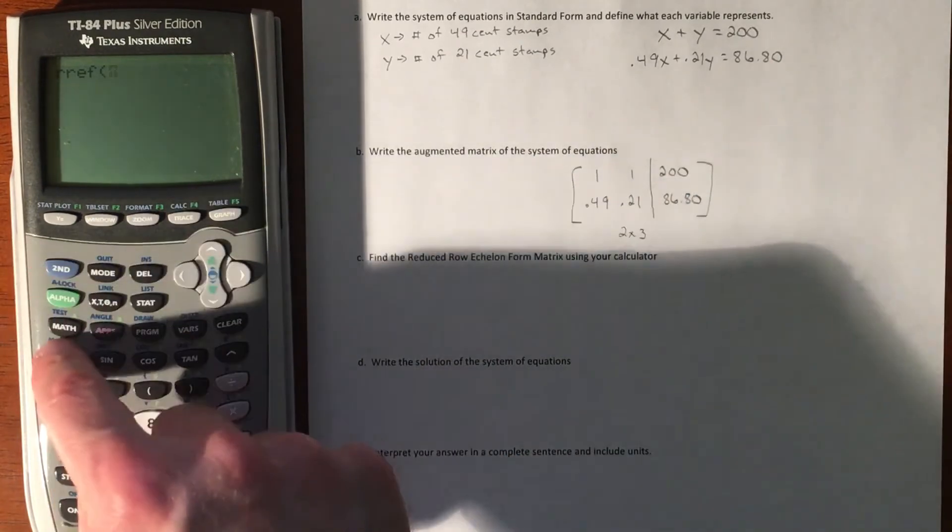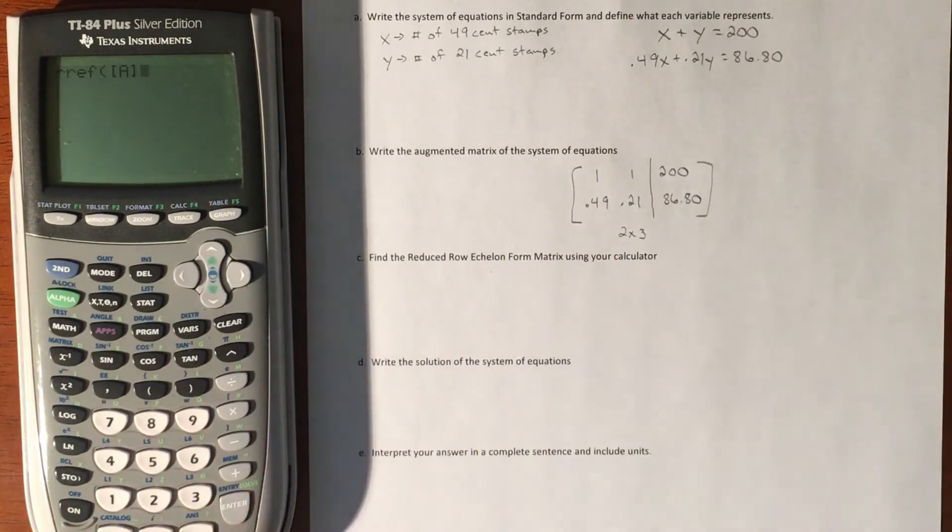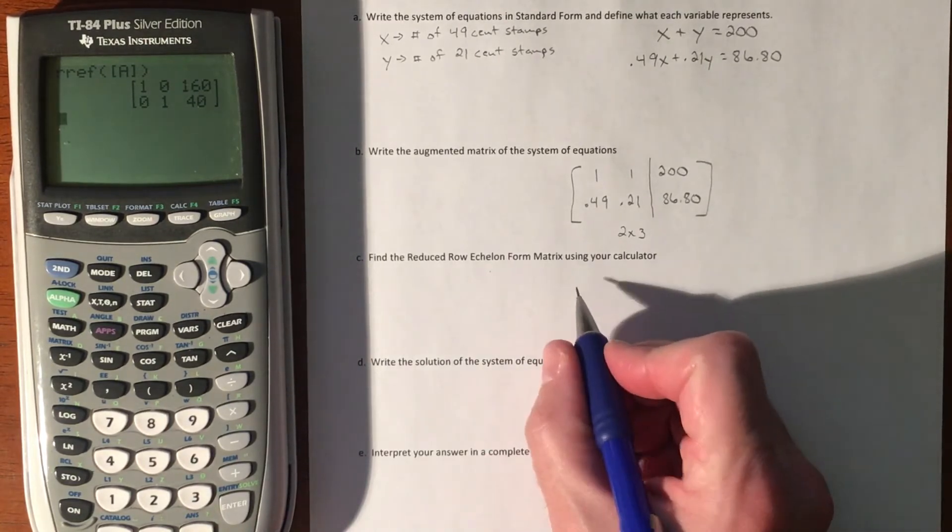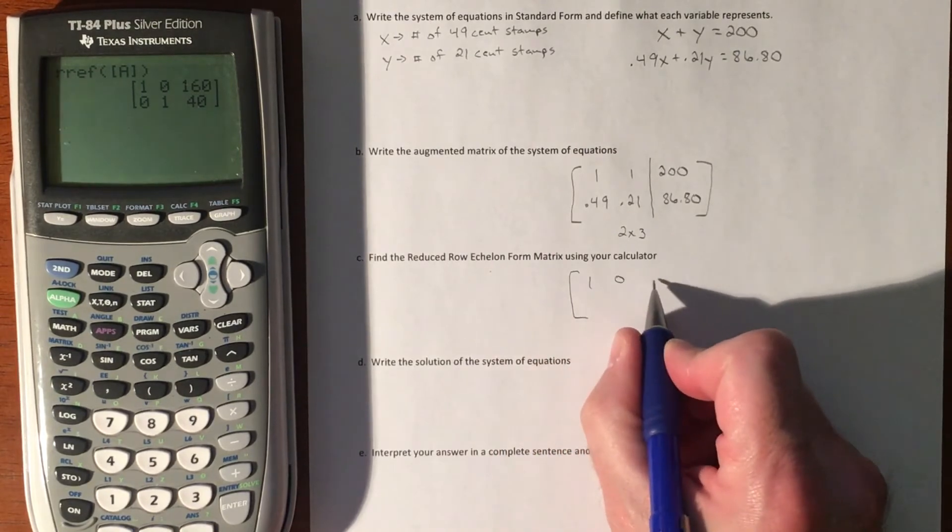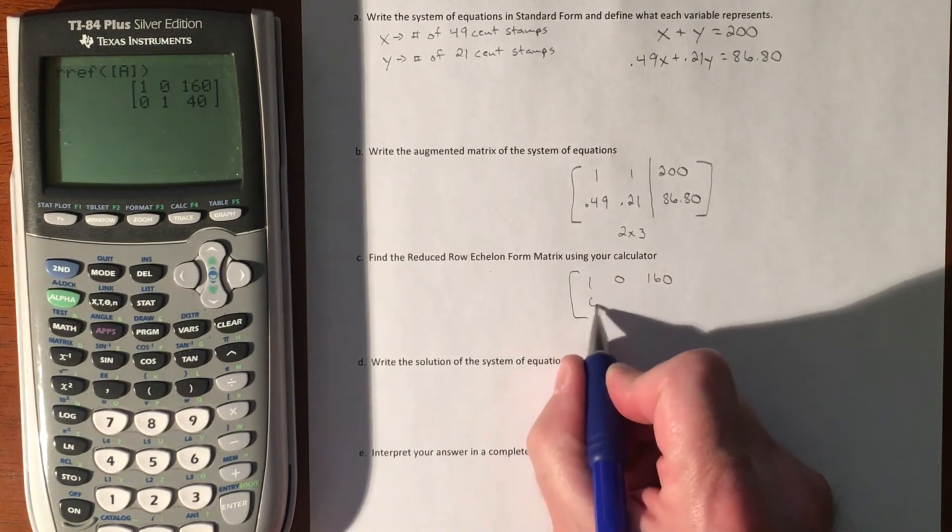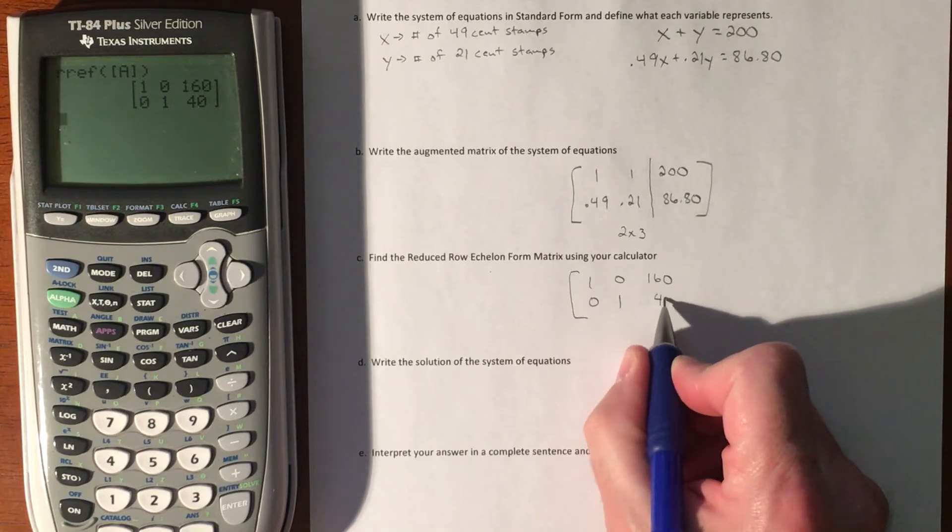Matrix A, and let it do its thing. In your reduced row echelon form, you have [1, 0, 160] and [0, 1, 40].